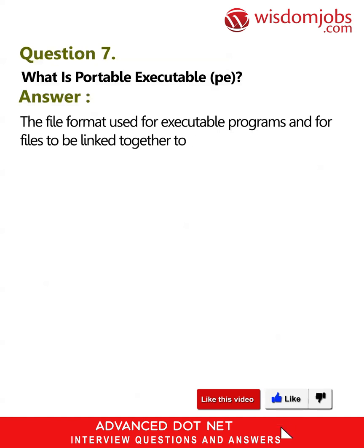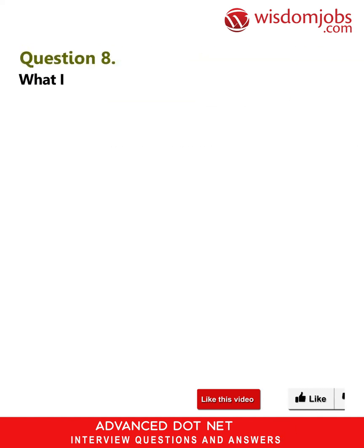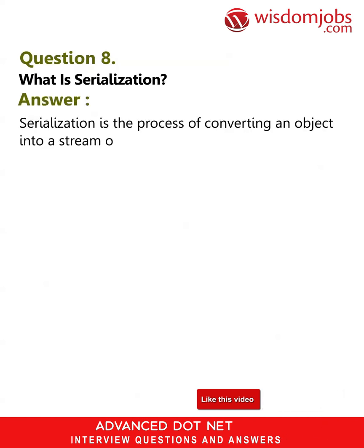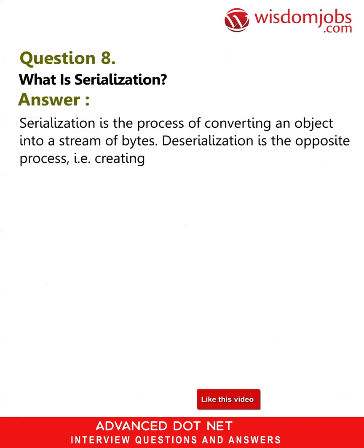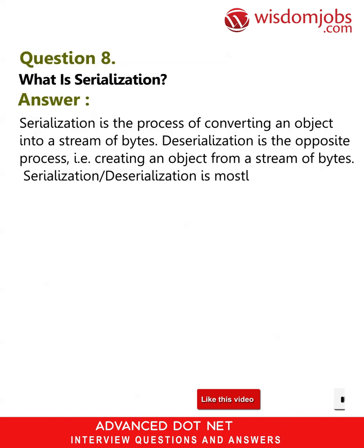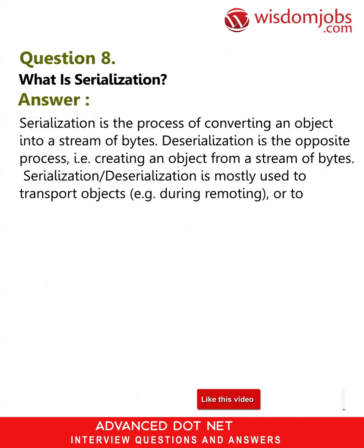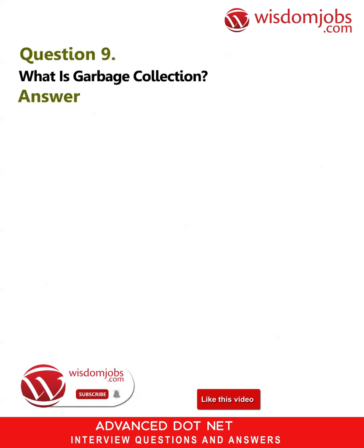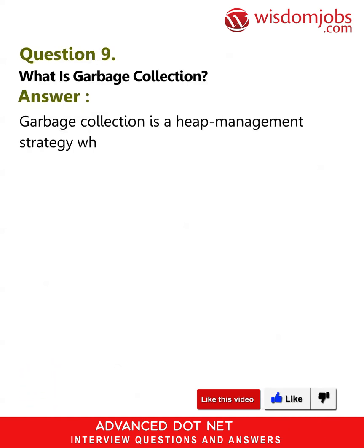Question 8: What is serialization? Answer: Serialization is the process of converting an object into a stream of bytes. Deserialization is the opposite process, i.e., creating an object from a stream of bytes. Serialization and deserialization are mostly used to transport objects, for example during remoting, or to persist objects, for example to a file or database.